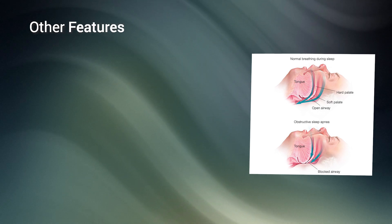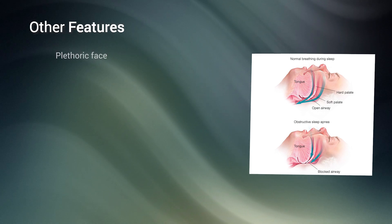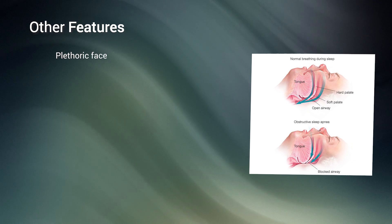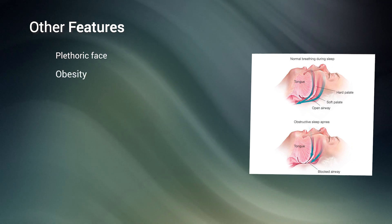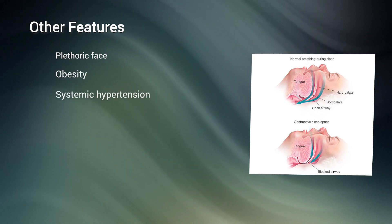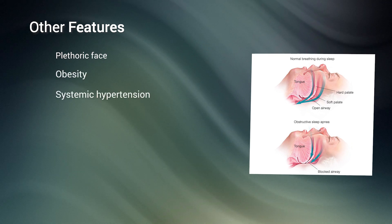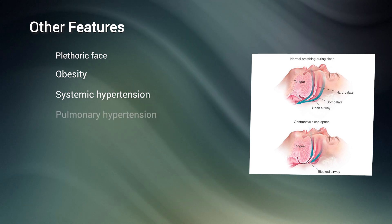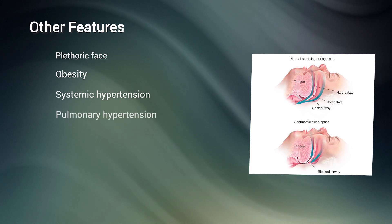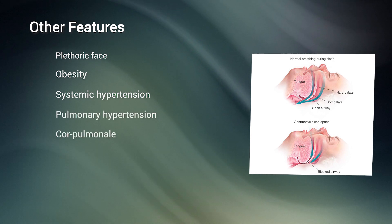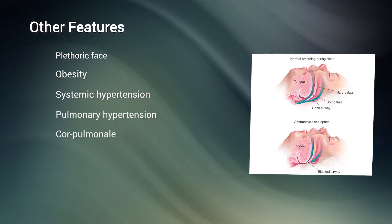Erythrocytosis is common in these patients and the patient looks plethoric. There is obesity and systemic hypertension is usually common. There may be signs of pulmonary hypertension or cor pulmonale may develop over time.